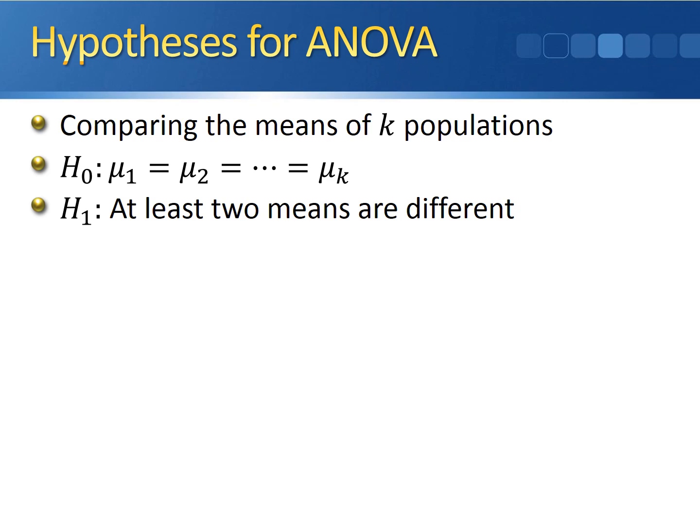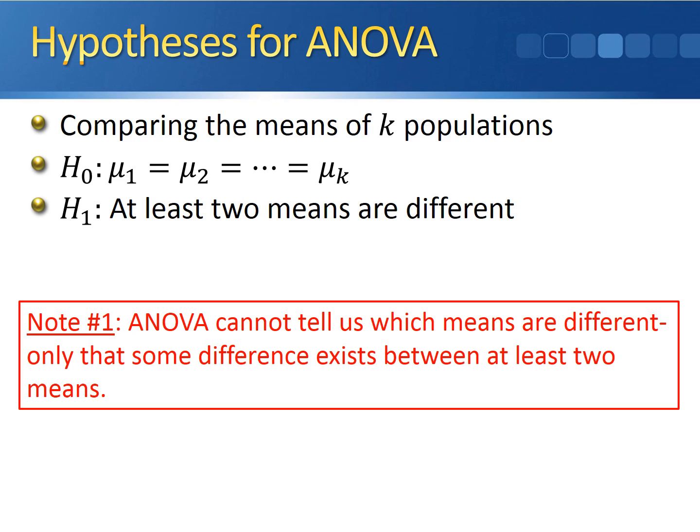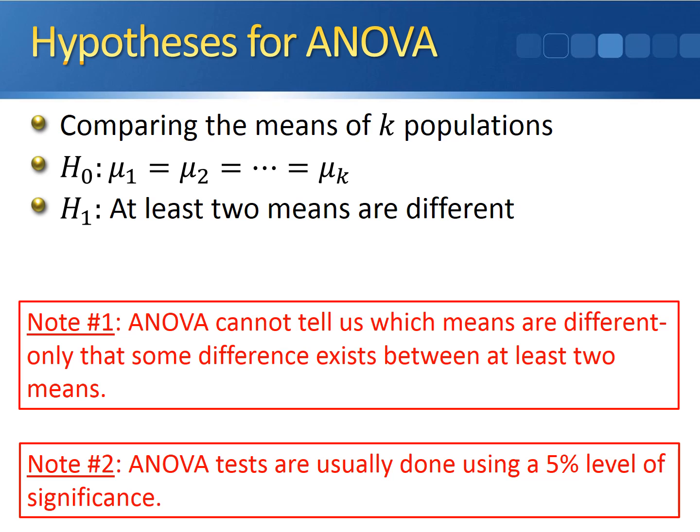Notice the form of the alternative hypothesis. It just says that at least two means are different. One problem with ANOVA is that it cannot tell us specifically which means are different — it can only tell us that there is some difference between at least two of the means. We'll encounter a procedure later in the course that will tell us specifically which means are different. Also note that ANOVA tests are typically done using a 5% level of significance.